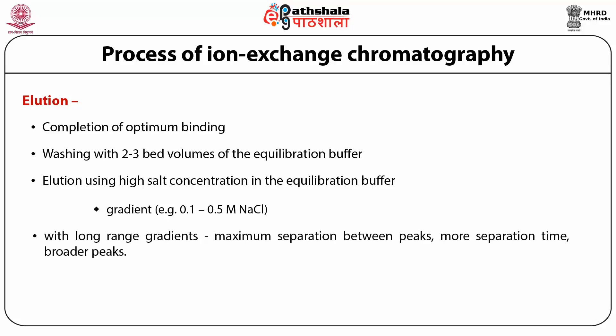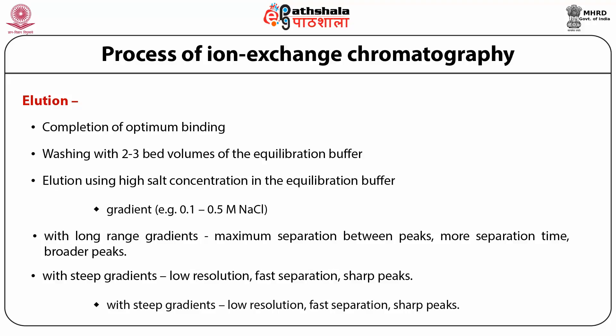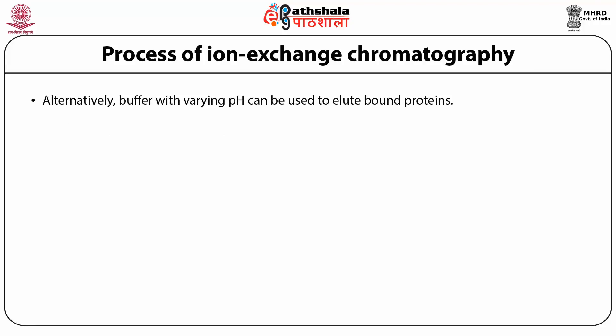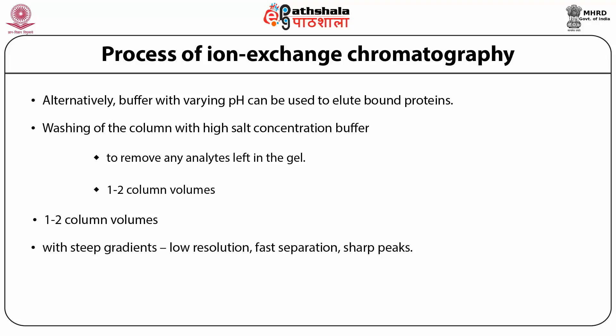Elution with long-range gradients results in maximum separation between peaks; however, separation time increases and peaks are broader. In case of steep gradients, separations are faster with sharp peaks, but resolution may be low as peaks elute close to each other. Alternatively, buffer with varying pH can also be used to elute bound proteins. After completion of each run, the column should be washed thoroughly with high salt concentration — at least 2 to 3 bed volumes — to remove any remaining analyte and preserve the column for next use.